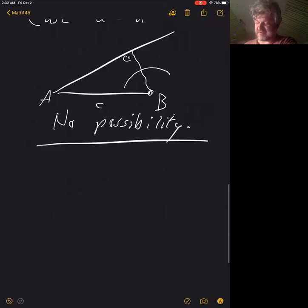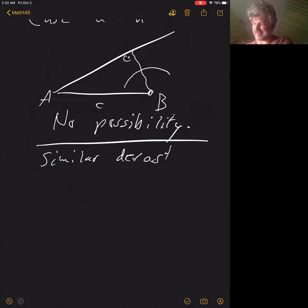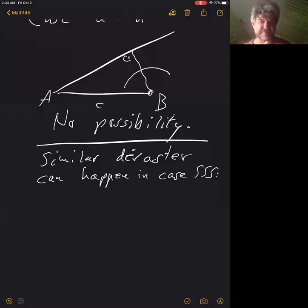To wrap this up, let me mention that something similar can happen when you're given three sides of a triangle. So we call that the SSS case. And we can be given three sides - the longest side cannot be longer than the sum of the two shorter ones.